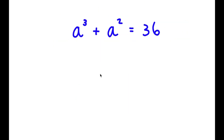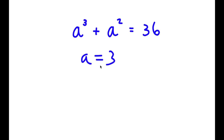In this problem, I have a to the power of 3 plus a squared equals 36. To find all solutions, I need to first find one solution by plugging in some numbers. If we plug in 1, we get 2 equals 36, which is wrong. If we plug in 2, we get 8 plus 4, which is 12, equals 36 — wrong. If we plug in 3, we get 3 to the power of 3, which is 27, plus 3 squared, which is 9 — that gives 36 equals 36. So a equals 3 is one solution.